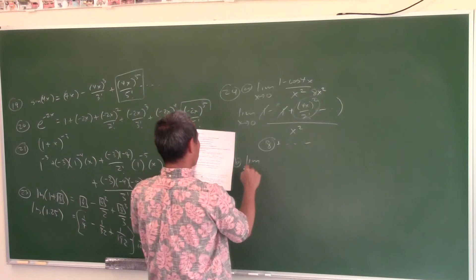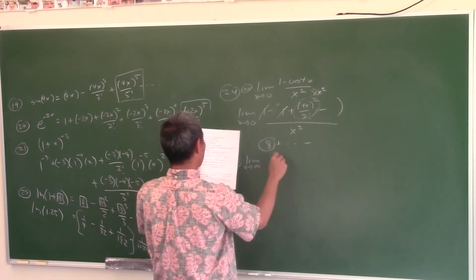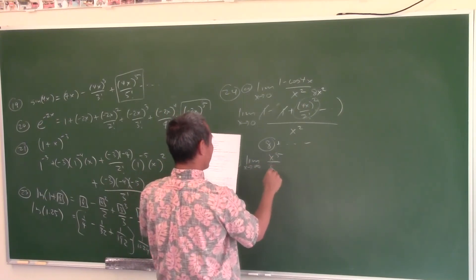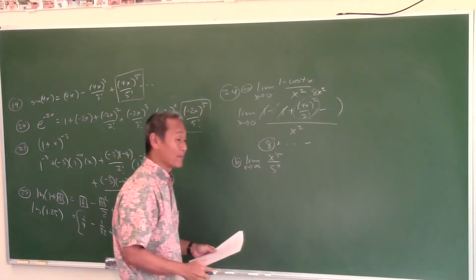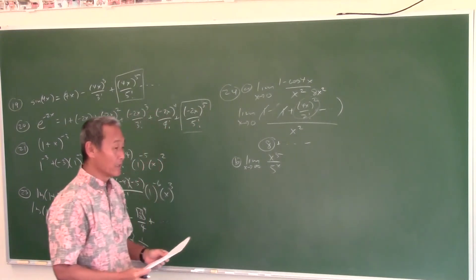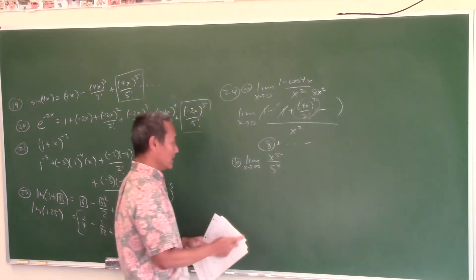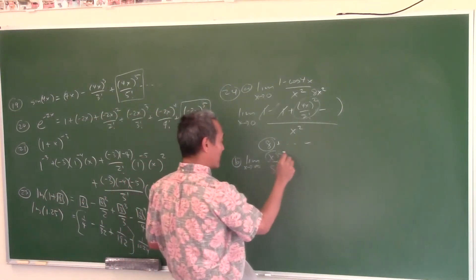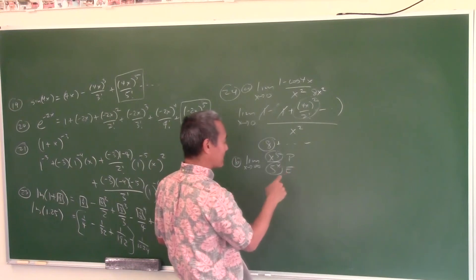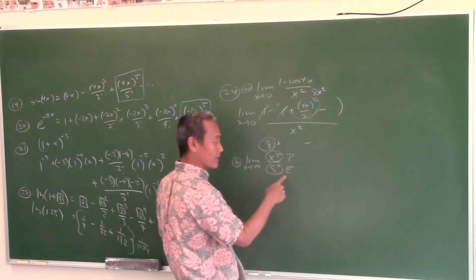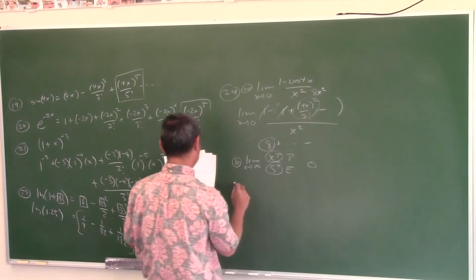Limit as x approaches infinity of x⁵ over 5^x: both top and bottom go to infinity, but this is a polynomial versus an exponential. The exponential goes to infinity faster, so the answer is 0.